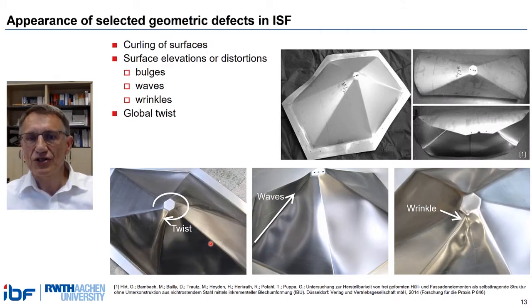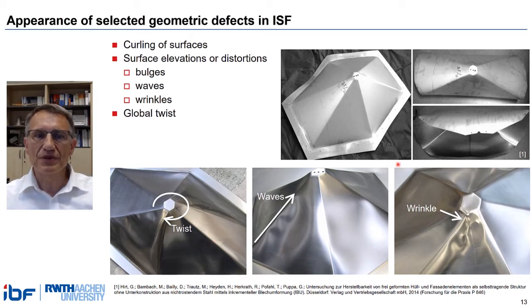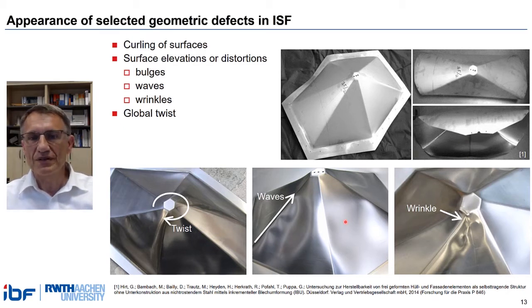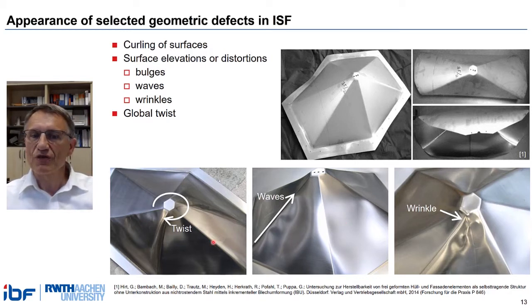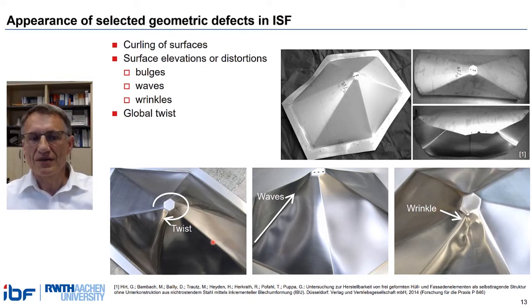What was schematically shown in the slide before can in reality be seen on a simple pyramidal shape from our architectural demonstrator. We see curling, wrinkling, waves perpendicular to the toolpath, or global twist. And I assume that many of us are aware of some of the underlying mechanisms, and many of us also know how some of these defects can be avoided.